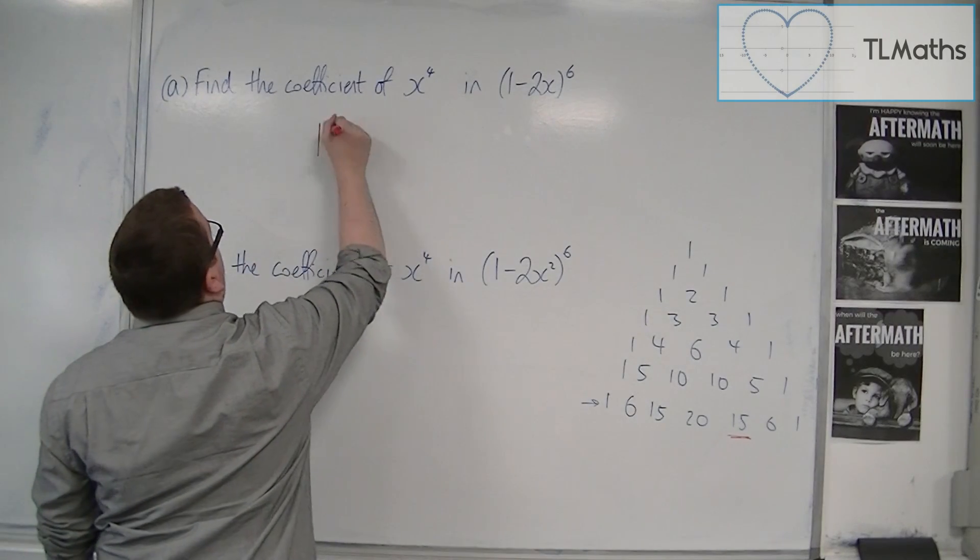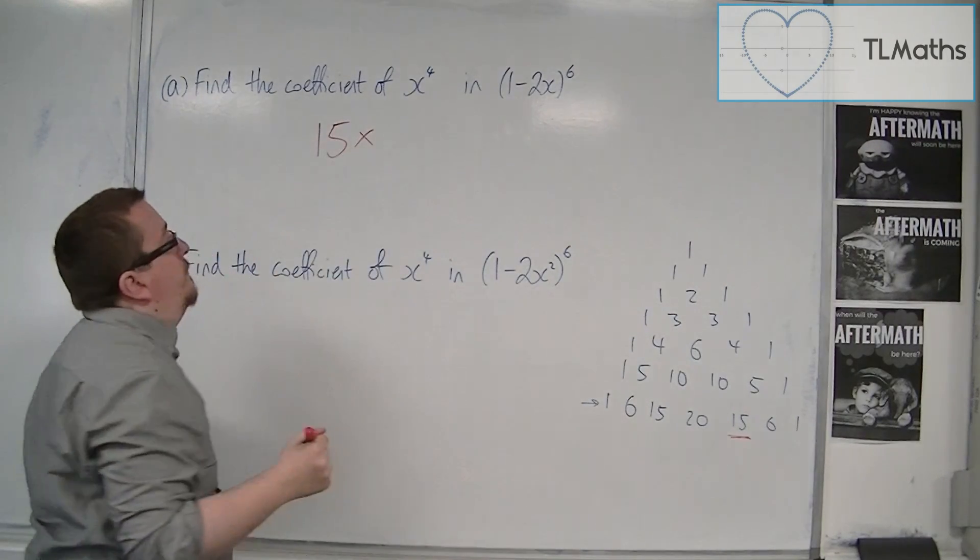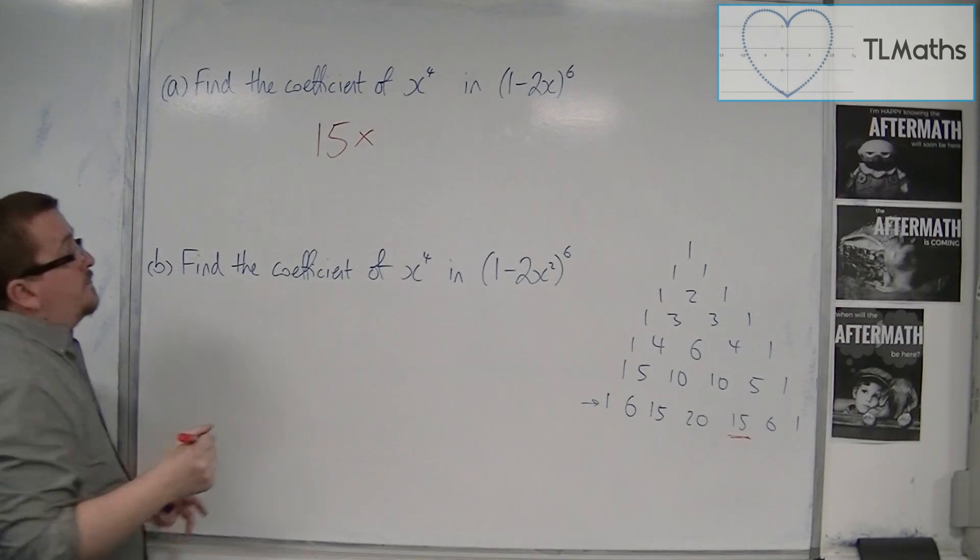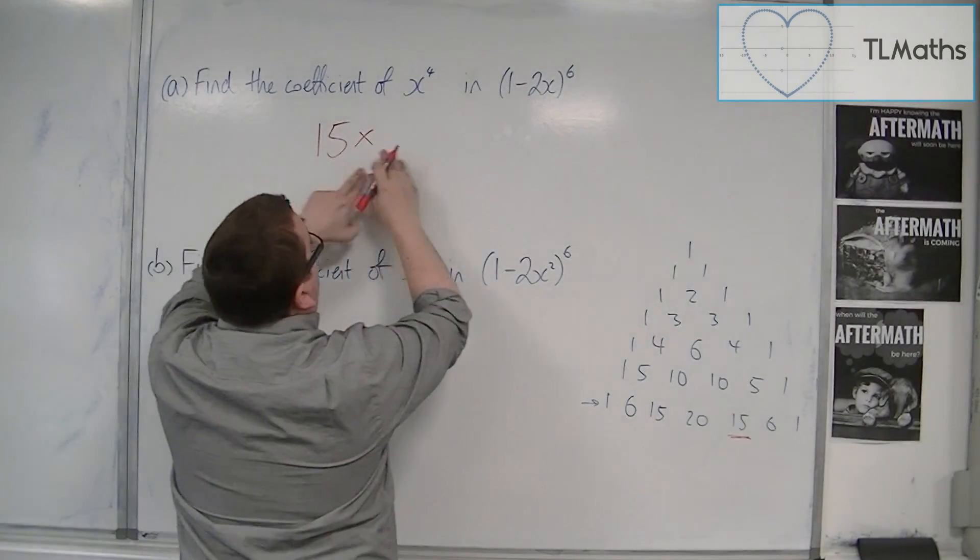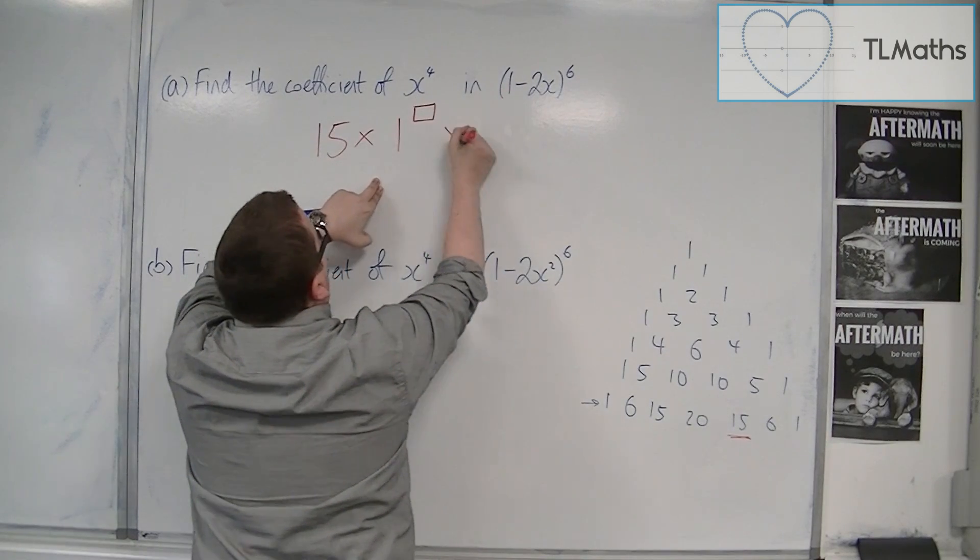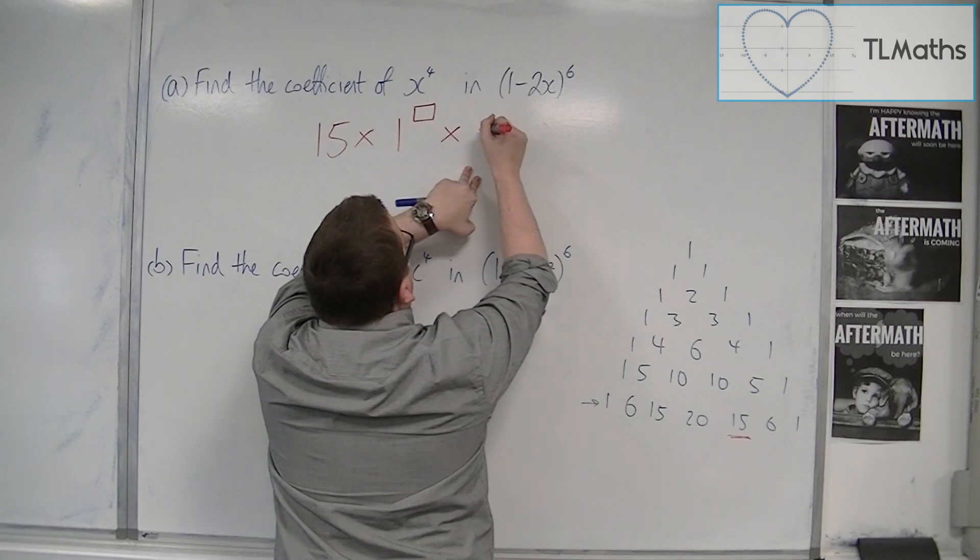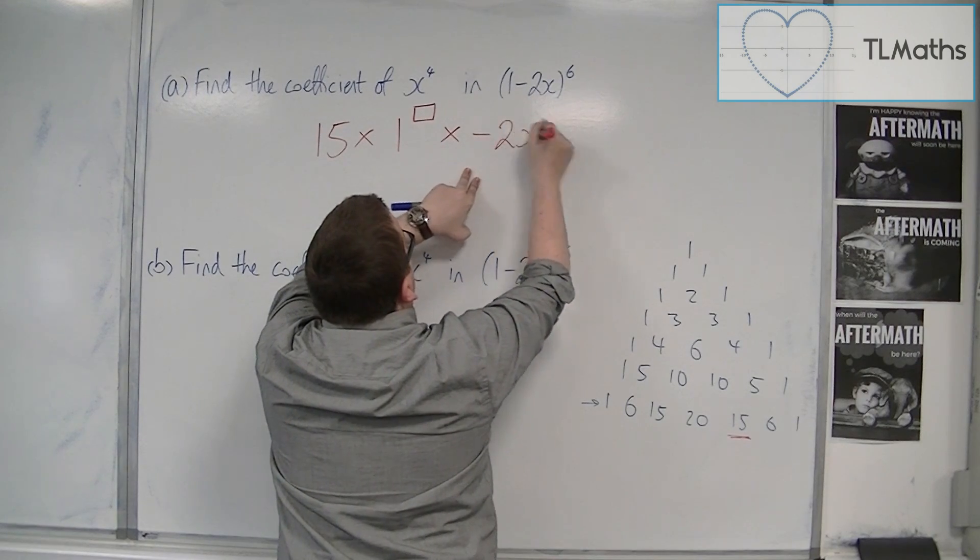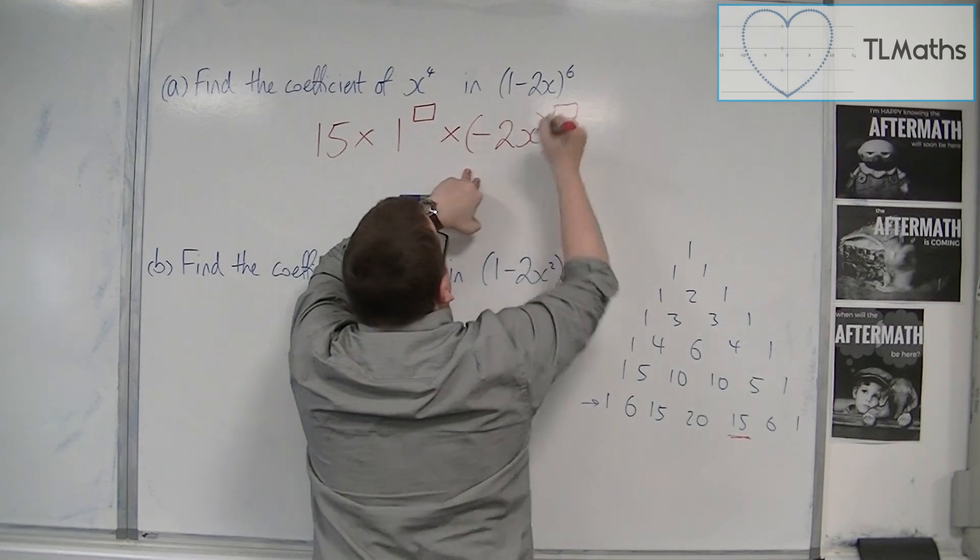So I definitely want 15 out the front. Now I know that it's going to be 15 times 1 to the something times minus 2x to the something.